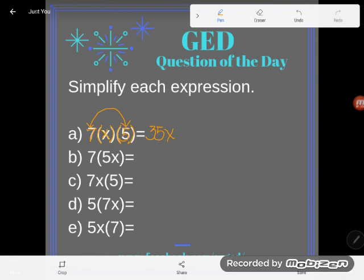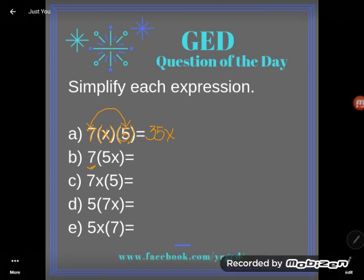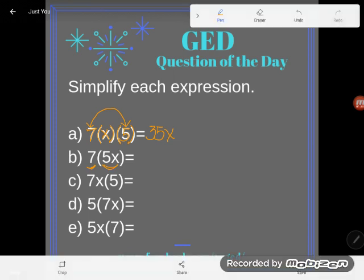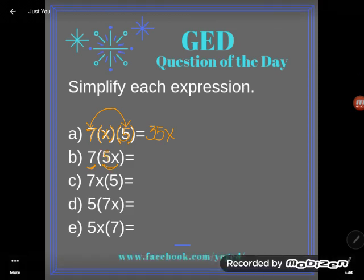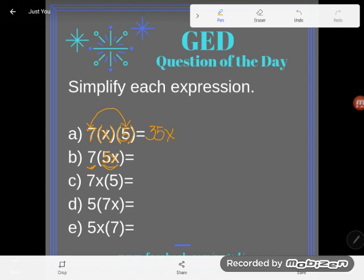Okay let's look at the next one. This time notice I'm asking you to multiply 7 times 5x. Well this might look different to you but realize what this means. See how this 5 and this x are shoved together? Those two things, the 5 and the x are multiplying.